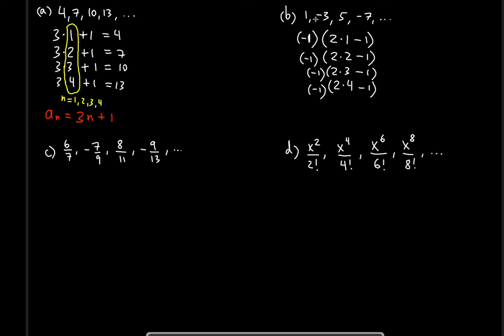Now for the powers: we need an even power so the first term is positive. Instead of squaring, I would put a zero here, because any non-zero number raised to the zero power equals one — it's positive. Next we raise to the first power — odd power for a negative number gives a negative. Then we square it to get a positive, then cube it to get a negative, because three is odd.